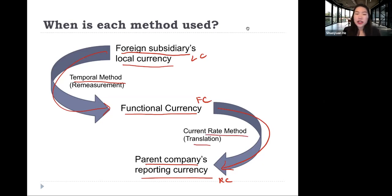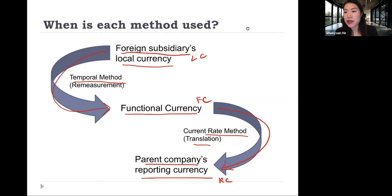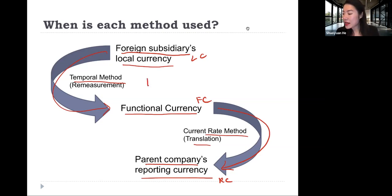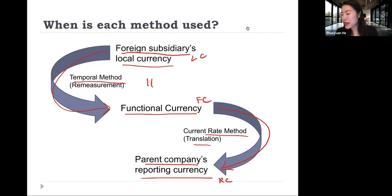Looking at this in more detail, there are three situations. The first situation is when the functional currency is the foreign subsidiary's local currency. If these two currencies are the same, then we only need one step — translation, using the current rate method.